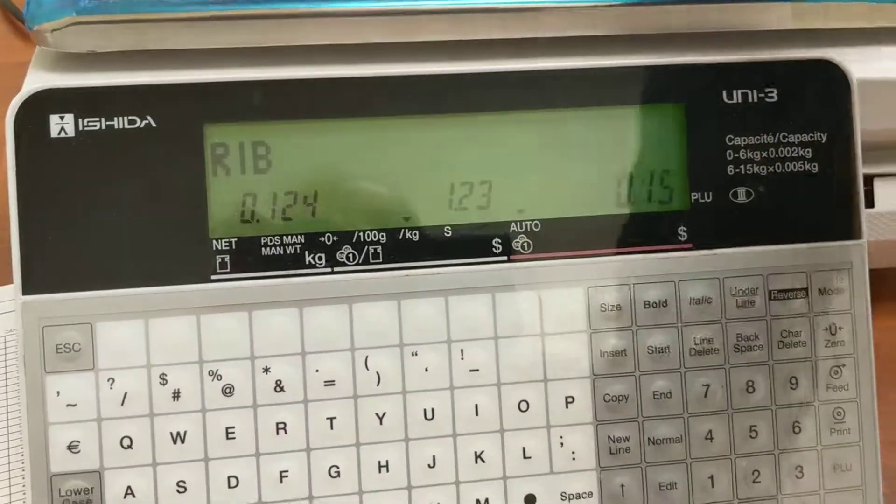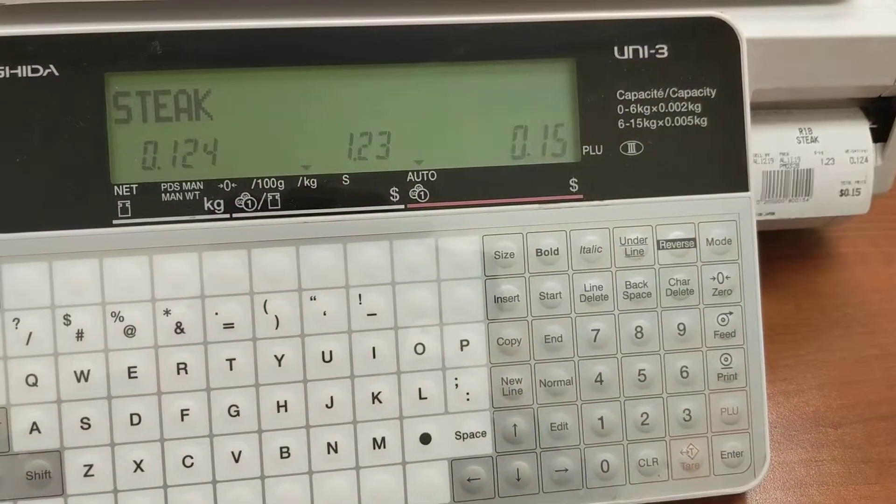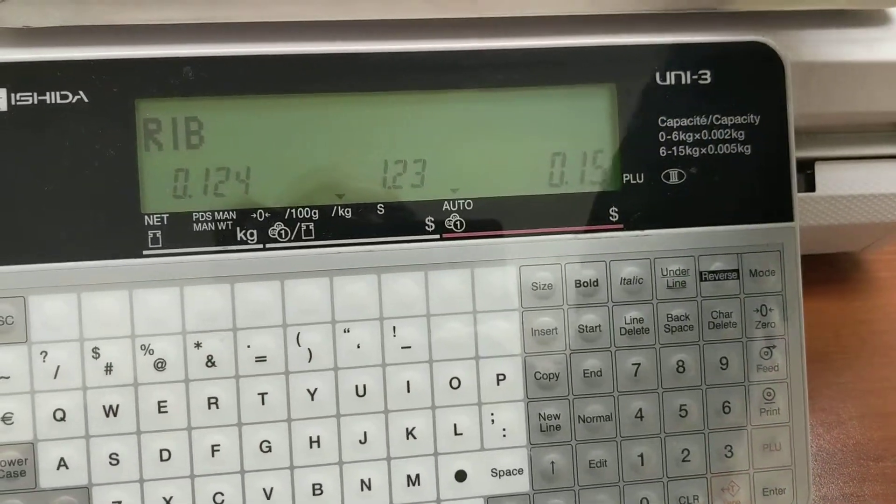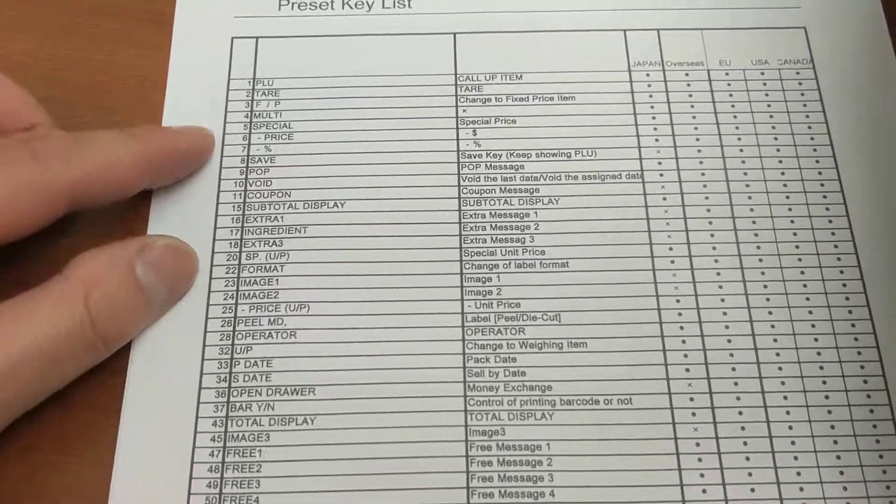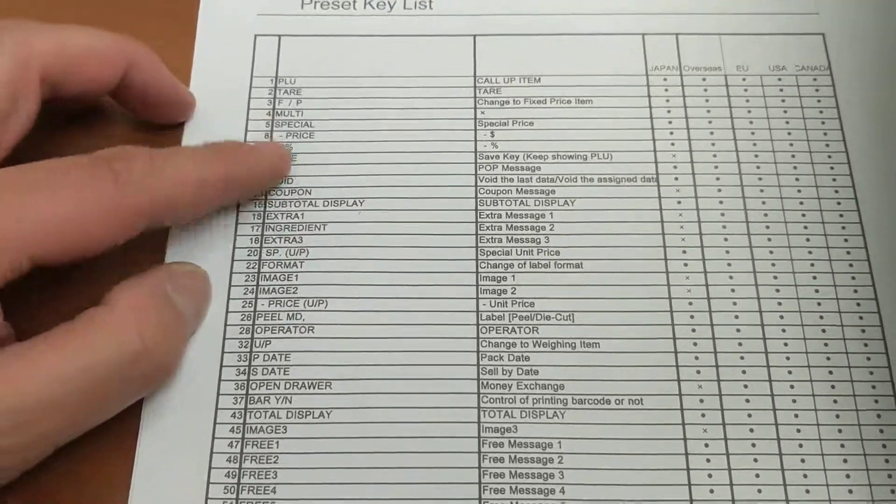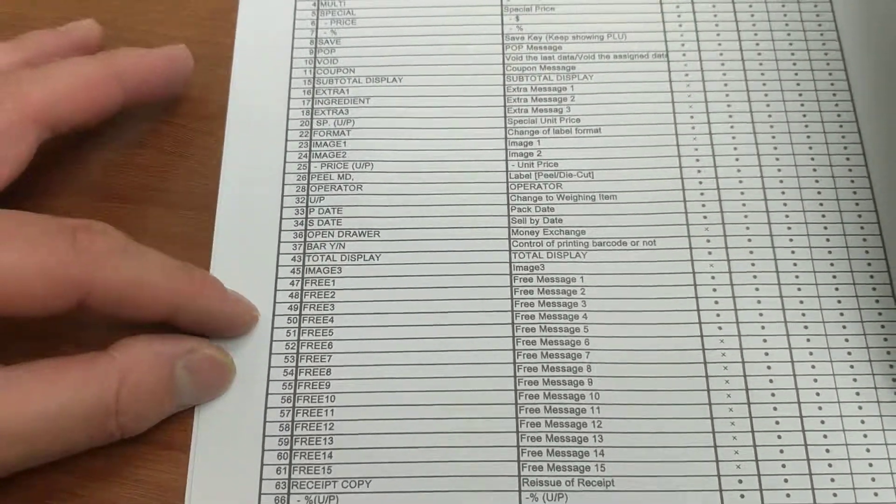So every time I put something else on, it'll print automatically. And if you need to add other function keys from this list, they're all numbered here with what they do, and you'd use the same procedure.